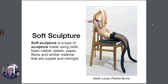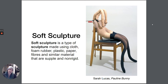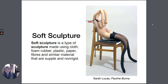Probably the most notable soft sculptor working today is Sarah Lucas. This is one of her pieces called Pauline Bunny. She's one of the YBAs — the Young British Artists — which is a kind of collective group. They're not that young anymore, but that's just how they're described. She does these works where she uses found objects like pantyhose to create these sculptural things.